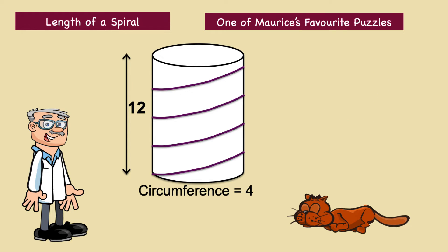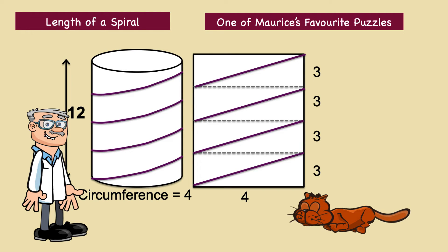Here is the solution. The simple key to solving this is to unwrap the cylinder by flattening it out into a rectangle. Each of the spiral's loops becomes a right-angled triangle. The width of each triangle is the circumference of the cylinder, which is 4.